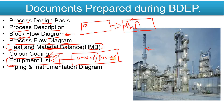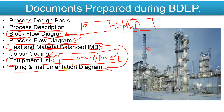Next is the P&ID — the Piping and Instrumentation Diagram — which is also known as the heart of the process. Initially you prepare the Block Flow Diagram, then the Process Flow Diagram. After simulation and Heat and Material Balance, you prepare the P&ID. The P&ID is the most important document because from it you can get all detailed information about instruments, equipment, and pipelines.